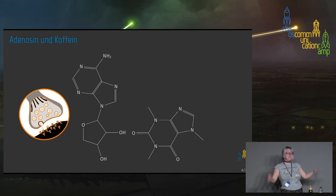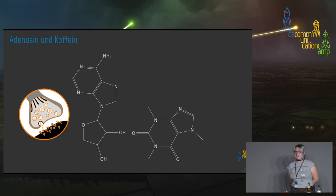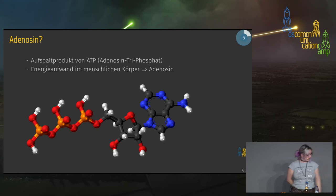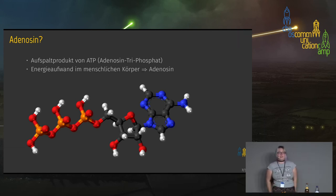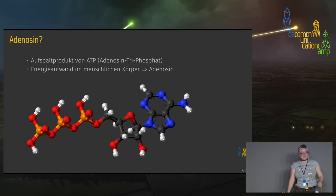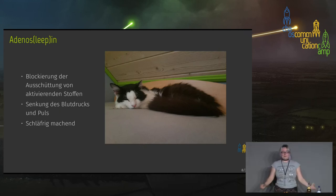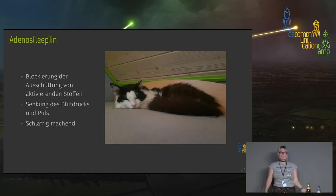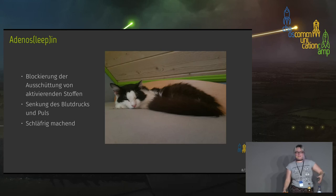All of us have synapses — basically how the body regulates what we need at each point. Caffeine goes where adenosine usually goes. Adenosine develops from ATP (adenosine triphosphate): whenever we use energy in our body, ATP is split up into adenosine among other things. A lot of adenosine makes us tired — it makes sure our body doesn't release more adrenaline. So adenosine is basically the opposite of caffeine.